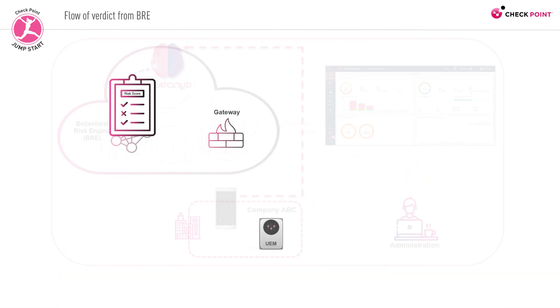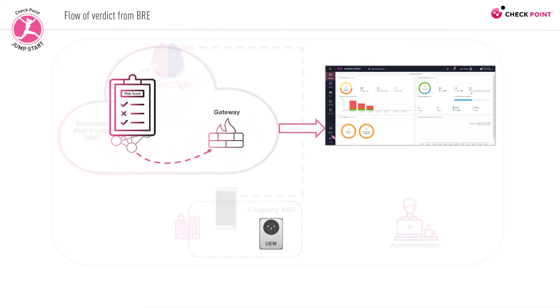This information is relayed to the Harmony Mobile Management dashboard, and from the dashboard to the UEM for further enforcement measures. Administrators can monitor in real-time the threats to their organization in the Harmony Mobile dashboard.